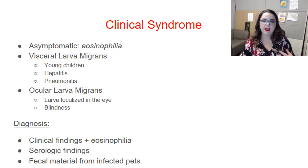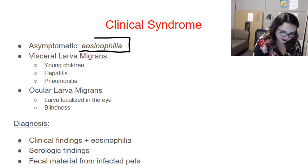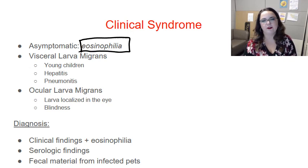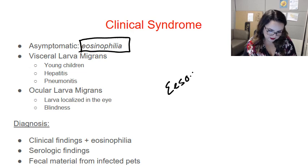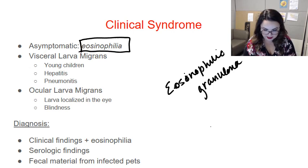Most patients are asymptomatic, but even asymptomatic patients may show some eosinophilia on bloodwork — that's really just your body fighting off the worm. Significant disease only occurs if you have a high parasite burden or the location of the larvae is particularly problematic. The larvae cause an eosinophilic granuloma, and if that granuloma is in a bad spot or leads to tissue necrosis, that's when we actually see disease.